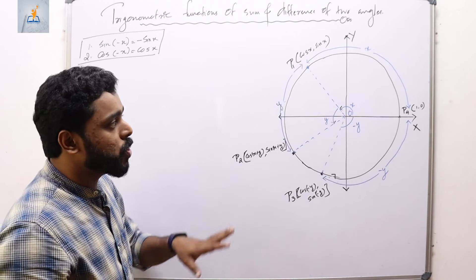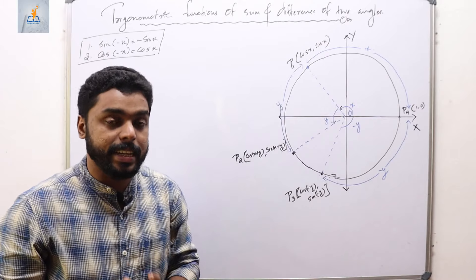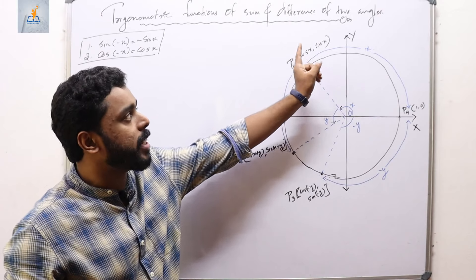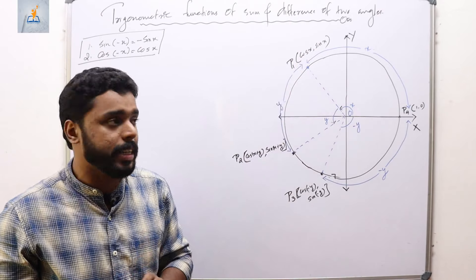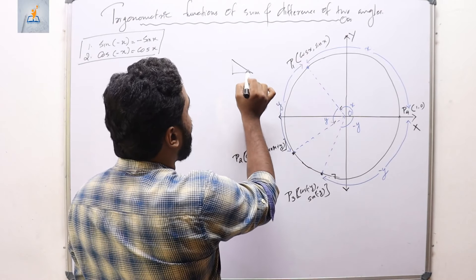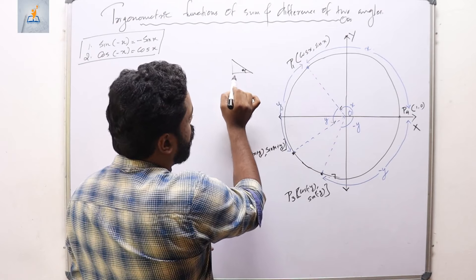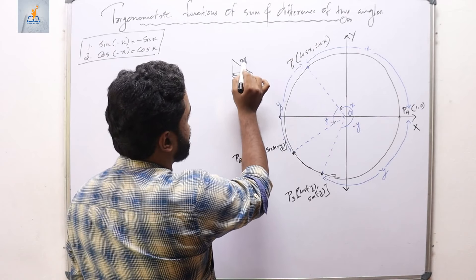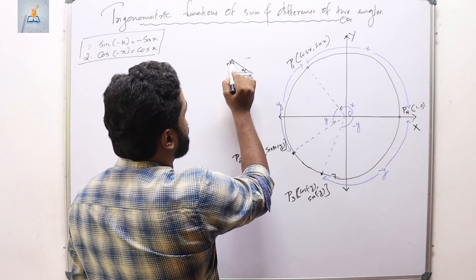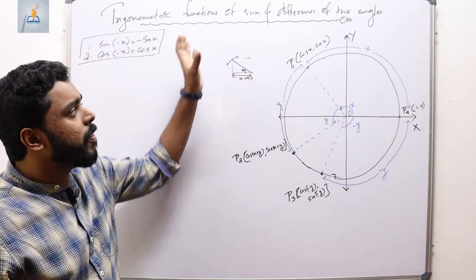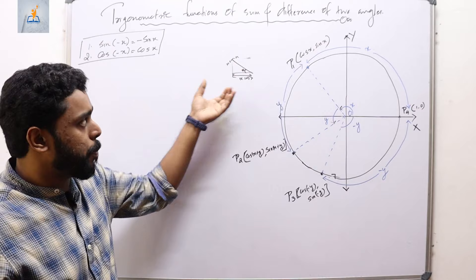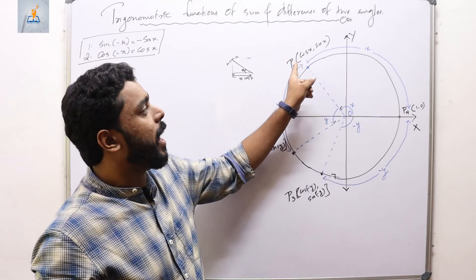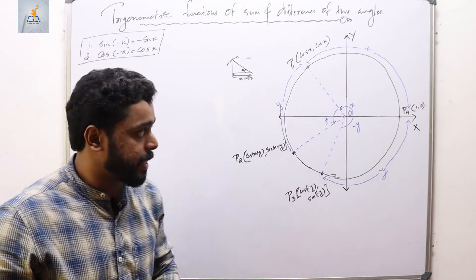Now let me mark point P2 such that the arc length from P1 to P2 is y units, so the arc length from P4 to P2 is x+y units, and the angle formed at the center is x+y radians. You know that if the angle subtended at the center is x radians, the x-component of the point is cos x and the y-component is sin x. So the coordinates of P1 are (cos x, sin x).